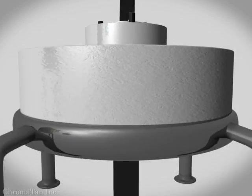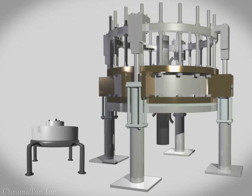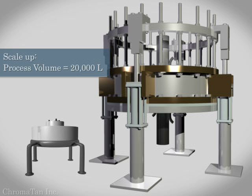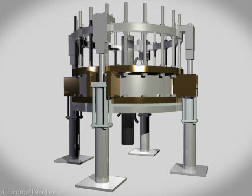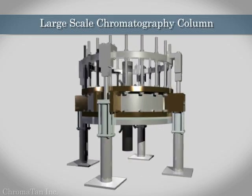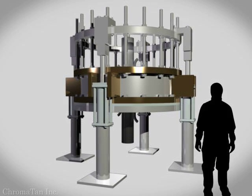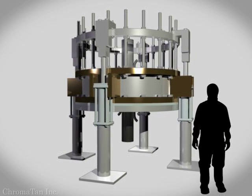The small chromatography column is a compact and convenient unit operation. However, when the process is scaled up to commercial manufacturing, the large-scale column becomes massive. To process 20,000 liters of fluid, a large-scale chromatography column stands 12 feet tall, with a footprint of 500 square feet.